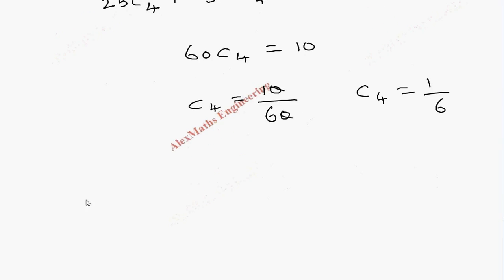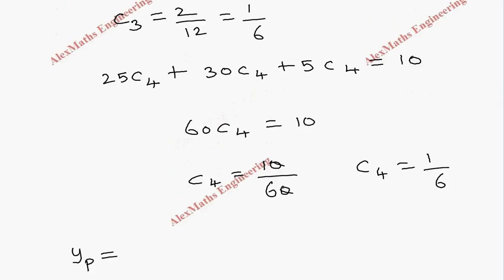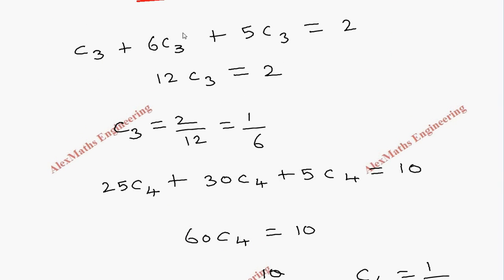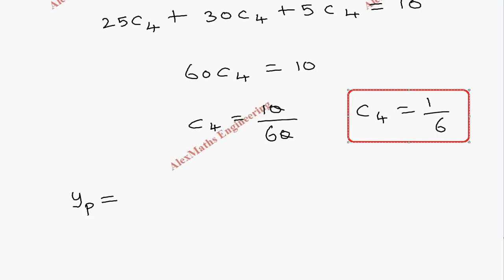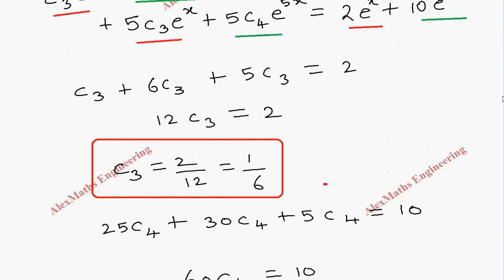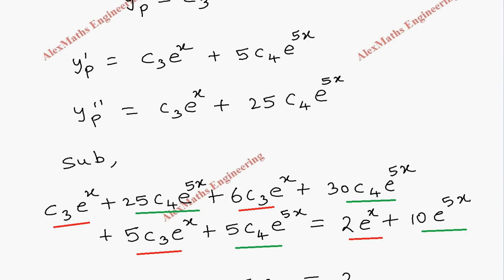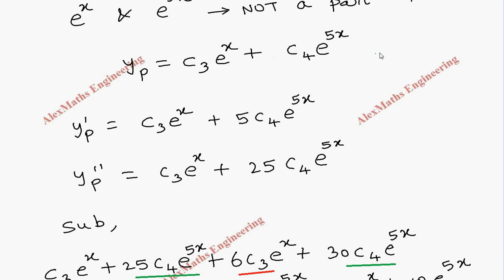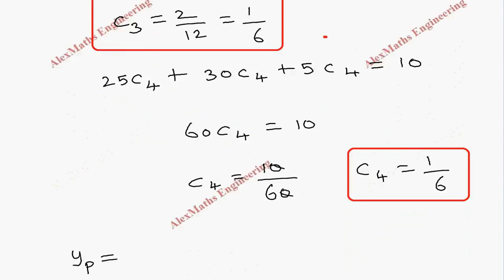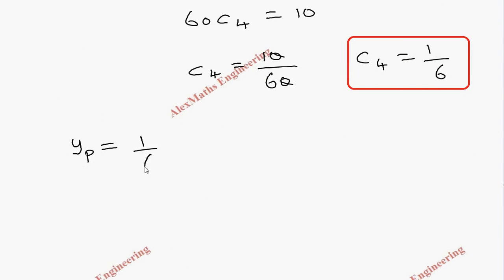Then, we can substitute in the particular integral the value of c3 and c4. So, the value of c3 is 1 by 6 and the value of c4 is also 1 by 6. The value which we assumed here, y of p is c3 e power x plus c4 e power 5x. So, here, 1 by 6 e power x plus 1 by 6 e power 5x.